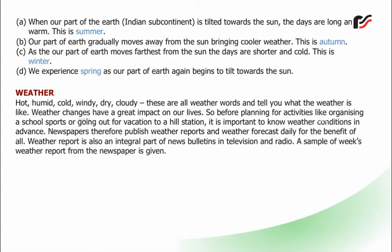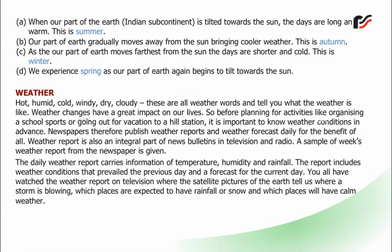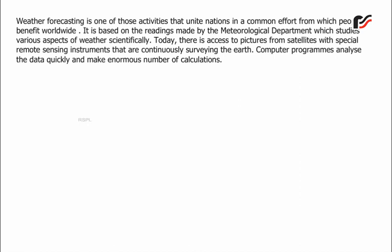A sample of a week's weather report from a newspaper is given. The daily weather report carries information of temperature, humidity, and rainfall, including weather conditions that prevailed the previous day and a forecast for the current day. You have all watched the weather report on television where satellite pictures of the Earth tell us where a storm is blowing, which places are expected to have rainfall or snow, and which places will have calm weather. Weather forecasting is based on readings made by the meteorological department, which studies various aspects of weather scientifically.